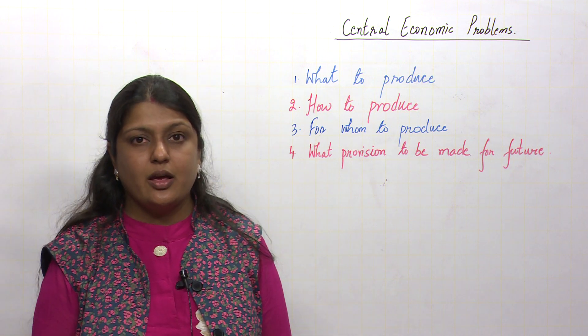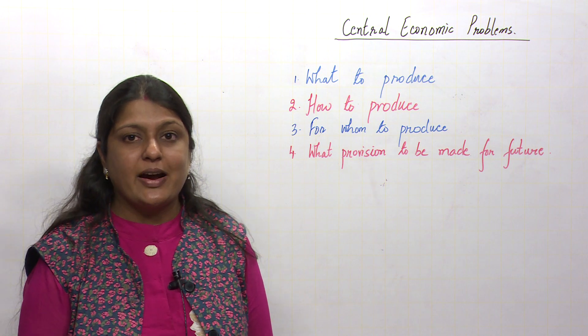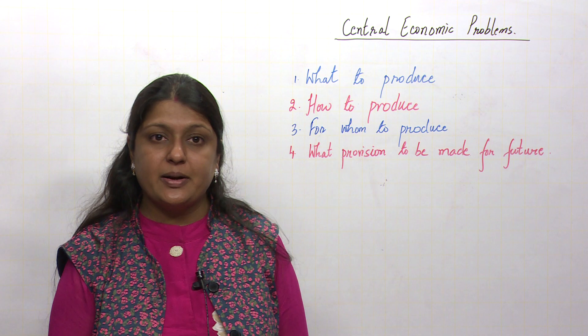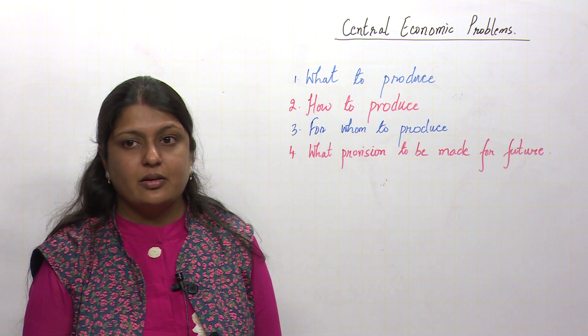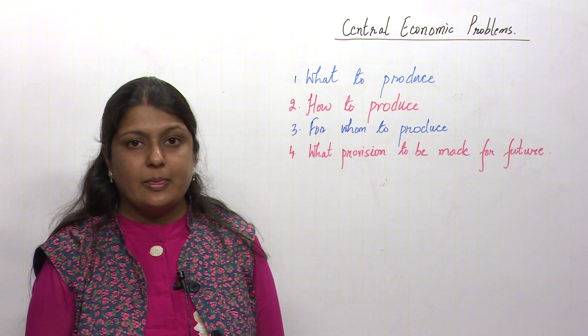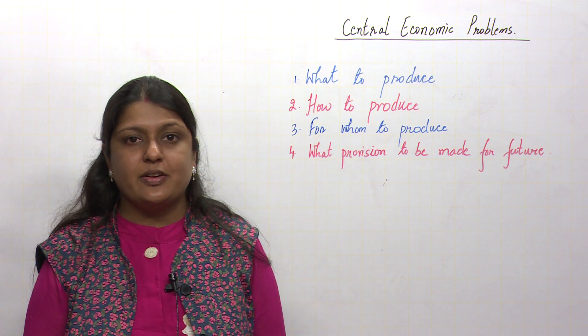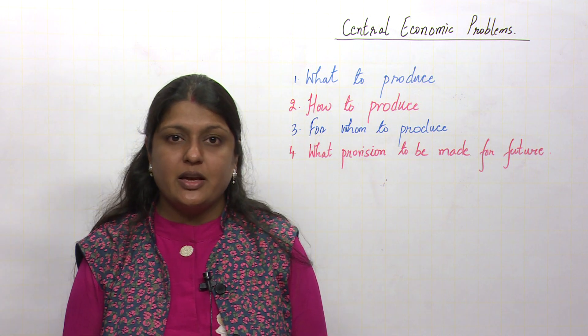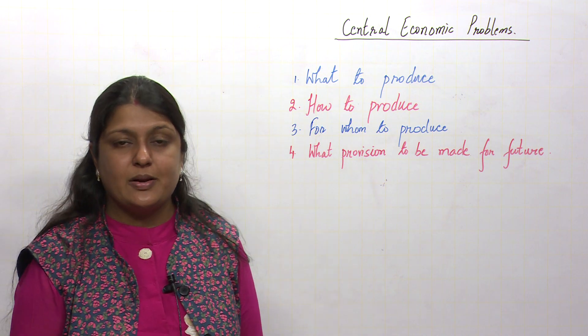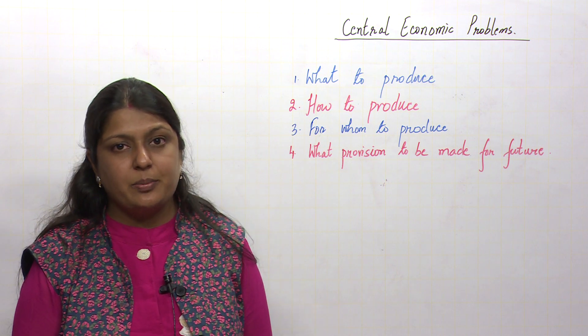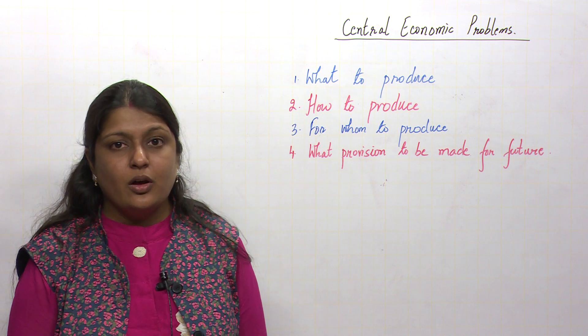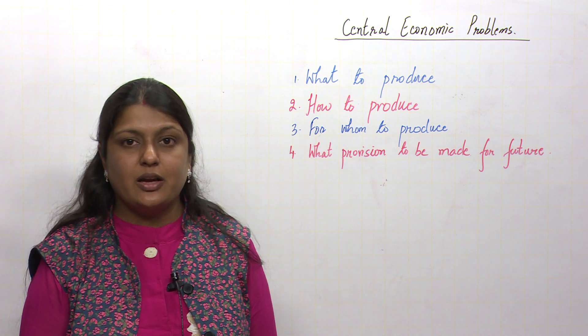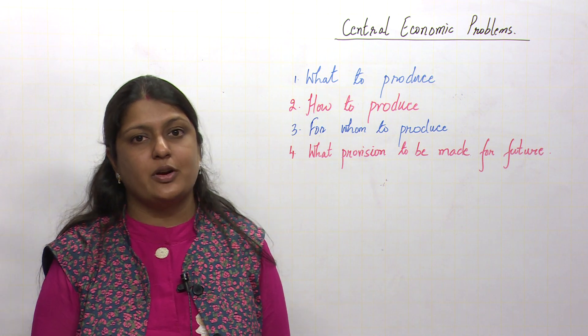The second problem is how to produce. How to produce depends on the factors of production available to us - whether capital, labor, or land is available. If the economy has surplus labor, production is labor-intensive and uses more labor in production activities. If the economy is capital-intensive and has more capital, they use capital for production activities.